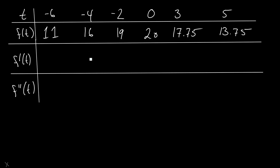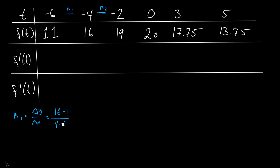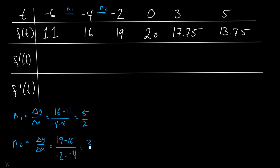To find the slope at f prime of negative 4, we'll calculate the slope between these two points — we'll call it m1 — and we'll calculate the slope between these two points and call it m2. So m1 is going to be delta y over delta x, which is going to be 16 minus 11 over negative 4 minus negative 6, which is 5 over 2. And m2 is going to be delta y over delta x, which is equal to 19 minus 16, divided by negative 2 minus negative 4.